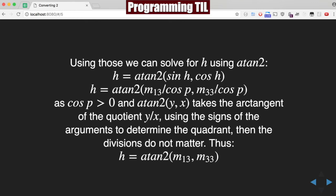So we know that we can just go ahead and remove those cosine P's, and we're left with H equals atan2 of M13, M33.